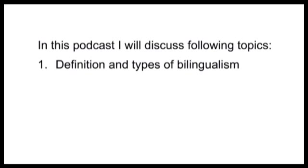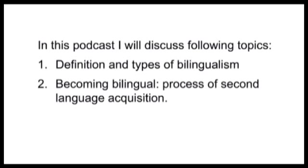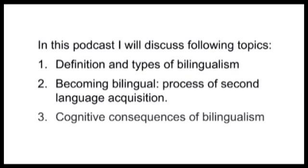This podcast will have three parts in which I'm going to discuss the following topics. The first topic will be definition of bilingualism and description of different types of bilingualism. The second topic will deal with the process of becoming bilingual, also known as the process of second language learning. And then finally, I'm going to consider some of the cognitive consequences of bilingualism on the language system and on the cognitive system in general.